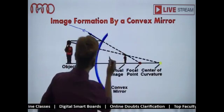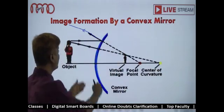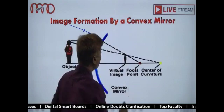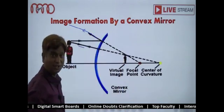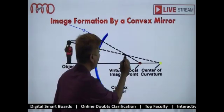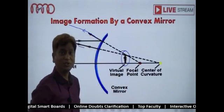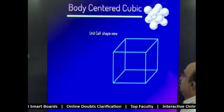is passing through the center of curvature - it is retracing its path. So the two rays appear to converge on the other side. That is why here you are going to get a virtual image.